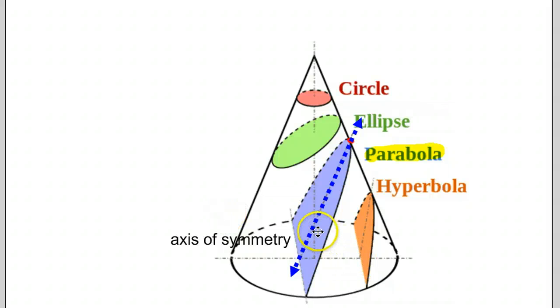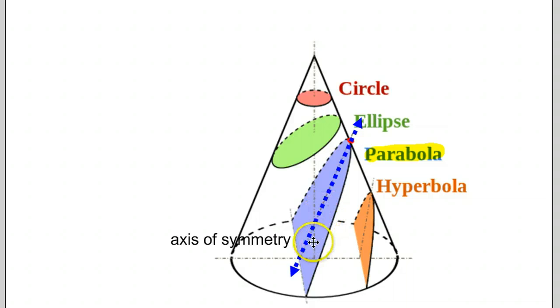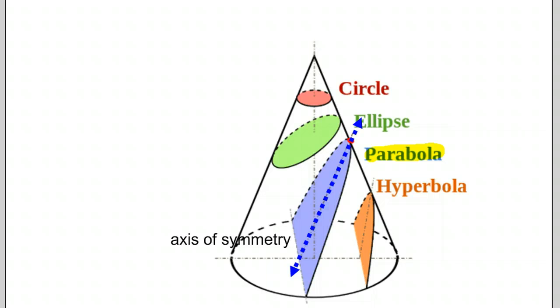The thing about the line of symmetry is that if you fold the parabola on the line of symmetry, one side of the parabola fits perfectly on the other side. And so we're going to take a look at two other important concepts and components of a parabola that you haven't really discussed before.